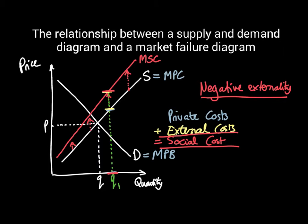The implication is that the current equilibrium level - the market equilibrium level which is here (we'll label this PM and QM for the market equilibrium) - is actually not at the optimal level. It's not in the best place for society. The best place for society is here, because if we're there, we're taking account of all the social costs, including the external costs.